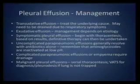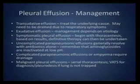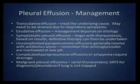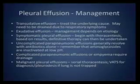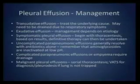Uncomplicated parapneumonic effusion is generally resolved with antibiotics alone - that's if they're caught early, the thoracentesis is done, the culprit organism is identified, and appropriate antibiotics are given. Remember that aminoglycosides do not function at a low pH. So if you have a parapneumonic effusion and the pH is 7.1 and you give them gentamicin or tobramycin, it's not going to do any good.